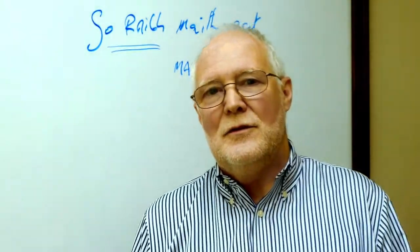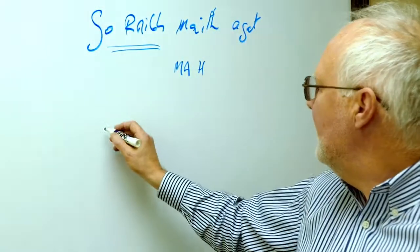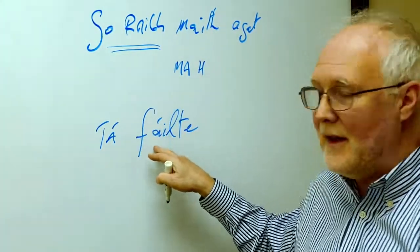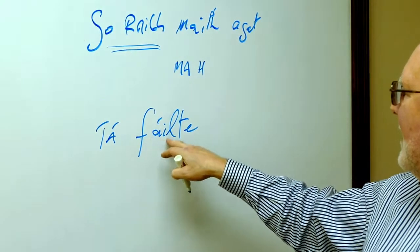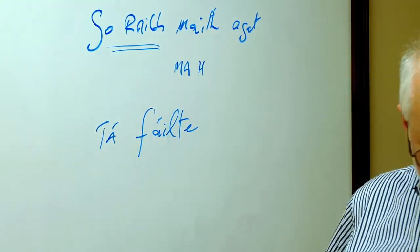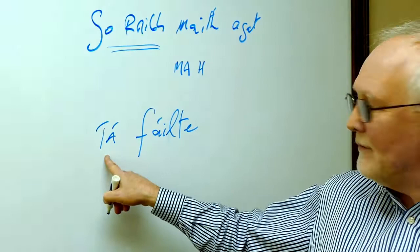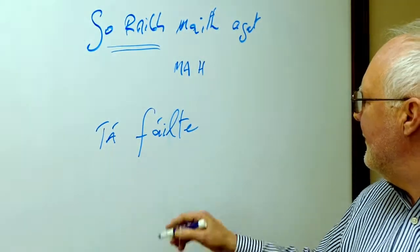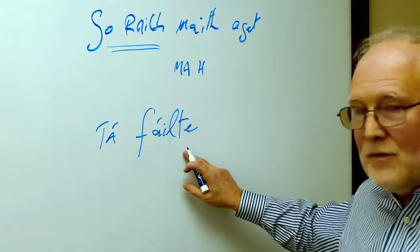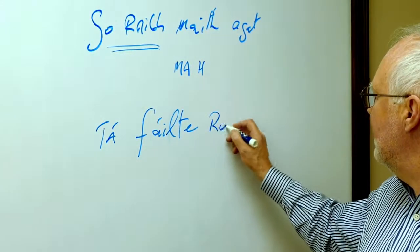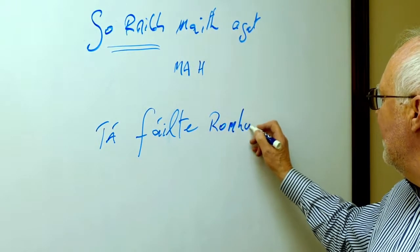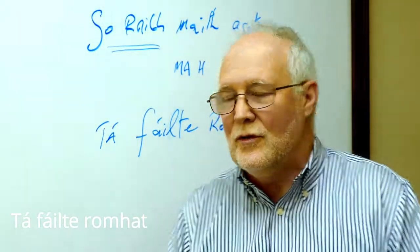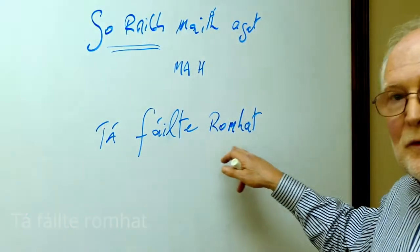If I say to you Go raibh maith agat, you say back to me Tá fáilte romhat. And I put the síneadh fada in. T-A-fada, F-A-fada, I-L-T-E. That's how we spell. So first of all, the verb to be, tá is, fáilte means welcome. And then watch what happens here. There's a T at the end, so that means it's to you. Tá fáilte romhat. There is welcome to you.